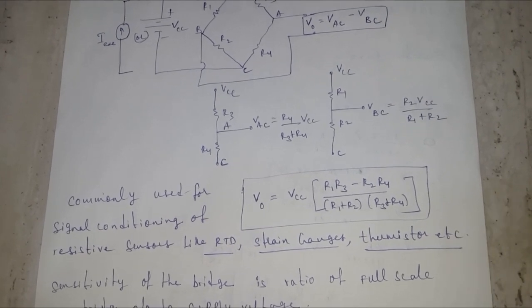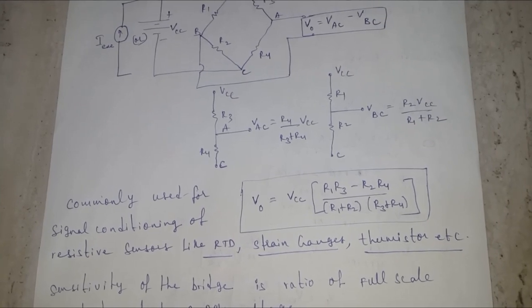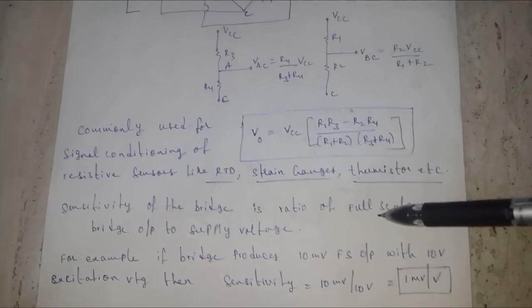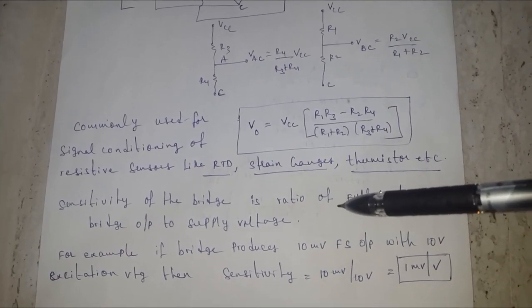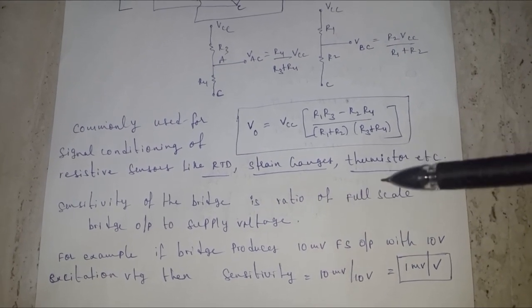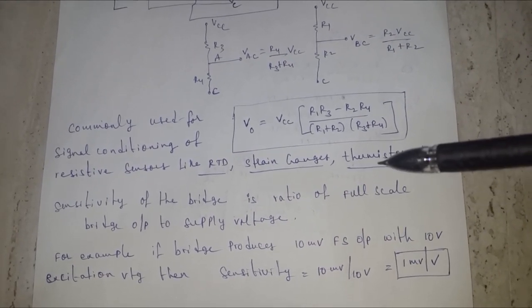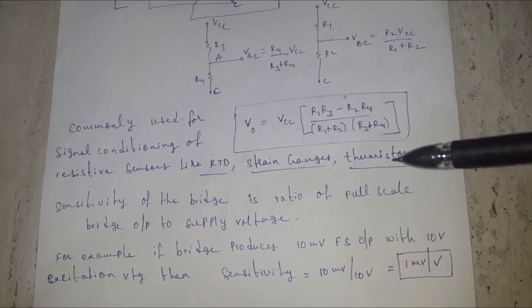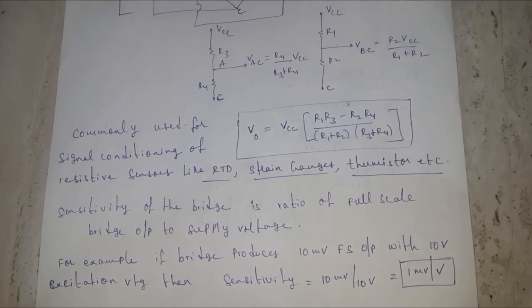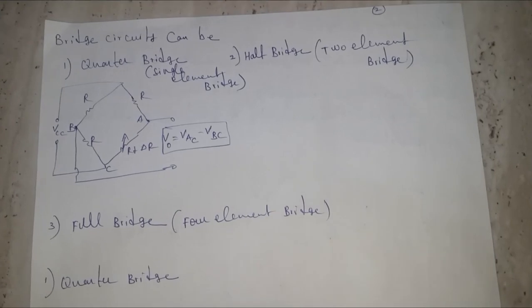It is used for resistive sensors like resistive temperature detectors (RTD), strain gauges for measurement of load and tension, and thermistors which are also temperature sensors. The sensitivity of this bridge is defined as the ratio of full-scale output to supply voltage. For example, if the bridge produces 10 millivolts full-scale output with 10 volts excitation, the sensitivity equals 10 mV / 10 V = 1 mV/V.